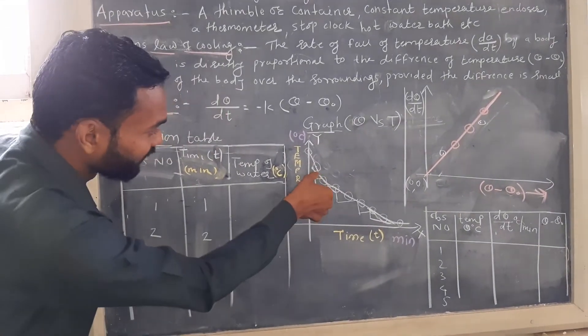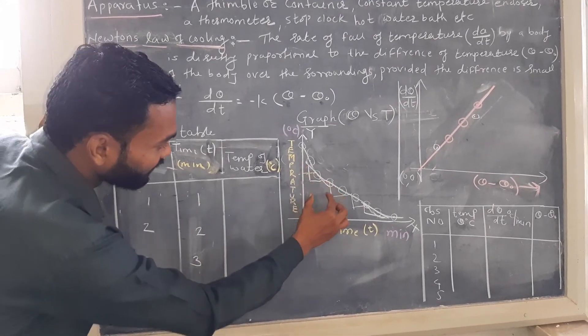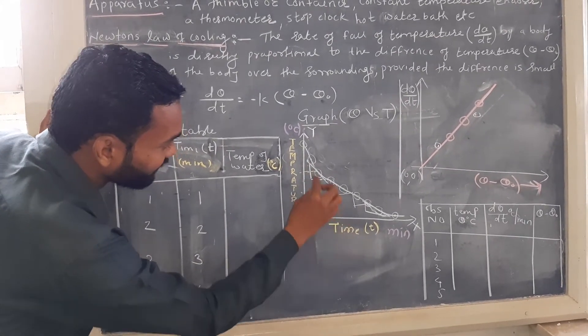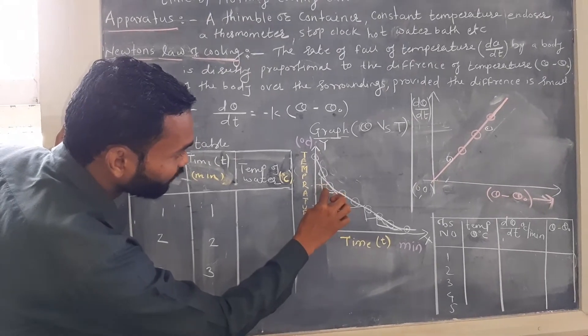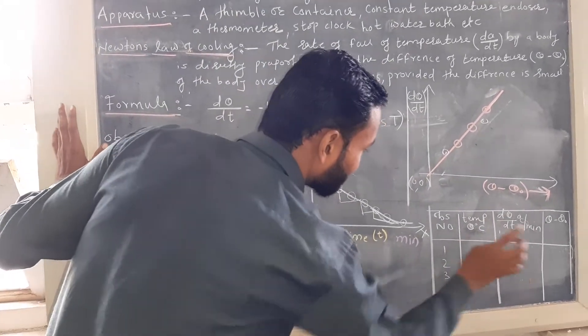Here this particular slope is nothing but dθ here, nothing but dt. If you find a slope then we will get dθ/dt.